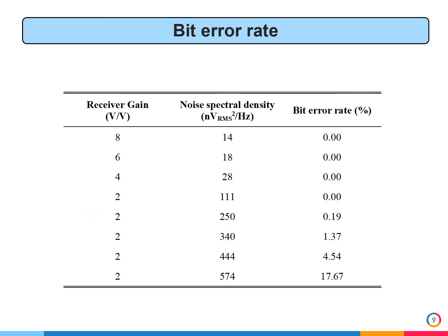The results of the bench experiments are represented in this table. The adjustable receiver gain algorithm worked as expected, decreasing the gain when the noise is high and increasing the gain when the noise is low. The system presented no errors when the noise spectral density is below 111 nV²/Hz, and it also shows that the system is capable of working in very noisy environments with errors below 5% when the noise is below 444 nV²/Hz.